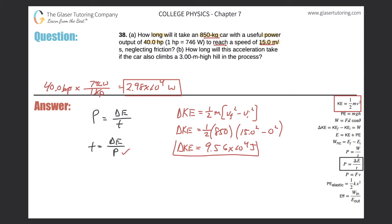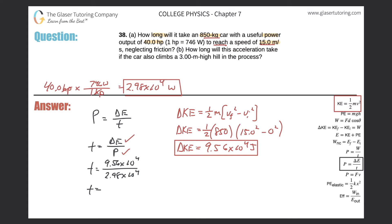This is the change in energy — specifically the change in kinetic energy. There is no potential energy in this part because the car didn't change height. So the total change in energy is simply the change in kinetic energy: 9.56 × 10⁴ J. Now I can divide that by the power: 9.56 × 10⁴ ÷ 2.98 × 10⁴ = 3.21 seconds. That is the answer for letter a.